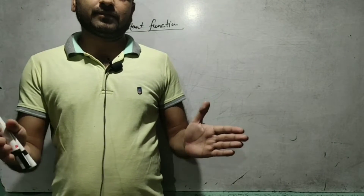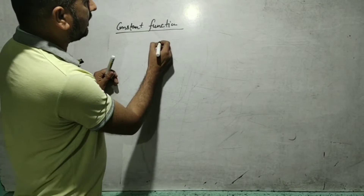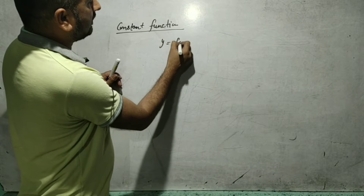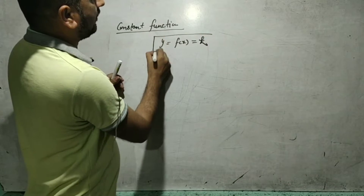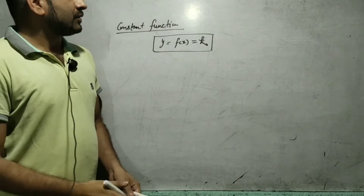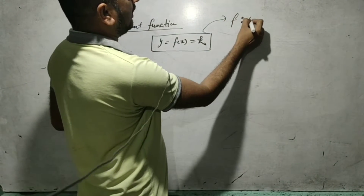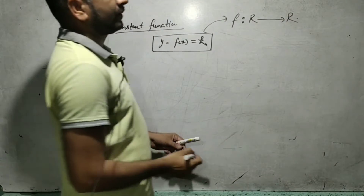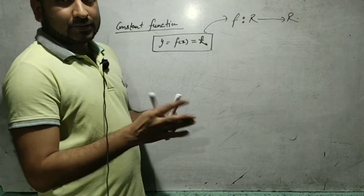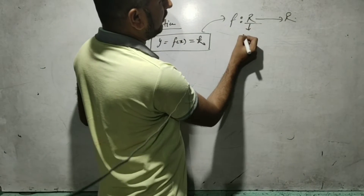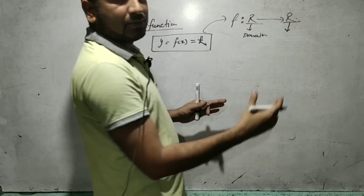The two methods are: the rule method and the graph method. The function is given as y = f(x) = k, where k is a constant number. This function is defined from f such that real numbers to real numbers, meaning k is part of the real numbers. The first R gives you the domain and the second R is related to the co-domain.